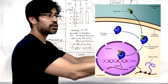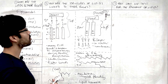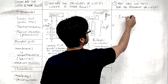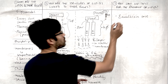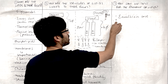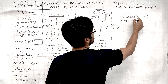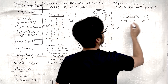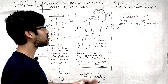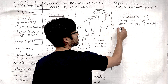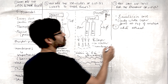Both triglycerides and phospholipids contain fatty acids, and fatty acids can vary in their structure. A fatty acid has a carboxylic acid group at one end. Fatty acids can be saturated — meaning they have a long, pretty much straight hydrocarbon tail — or they can be unsaturated, meaning their hydrocarbon chain contains a double bond between two of the carbons, which causes the chain to bend.